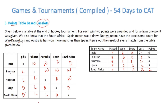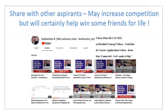You now know the outcome of each and every game, and you have also calculated the points in the table. With that, we come to the end of this exercise. I hope you've understood each and every type of problem that comes in CAT. Solve more along this path and we'll see you in the next part. Keep sharing with other aspirants so that more and more people can be benefited. Thank you and God bless you all.